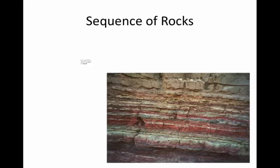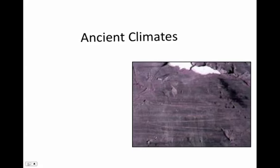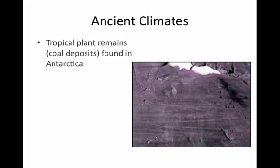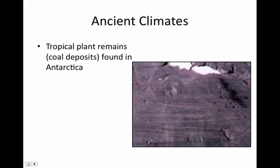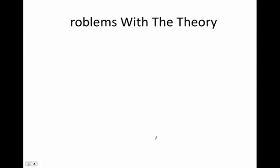Next, the sequence of rocks: the same rock patterns were found in South America, India, Africa, Antarctica, and Australia. How is this possible? One idea was that maybe they were all connected. Ancient climates also tell us that tropical plants — which are now coal deposits — were found in Antarctica, and evidence of glaciers was found in Africa, South America, India, and Australia during the same time period.